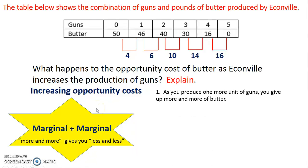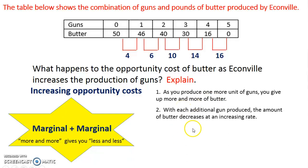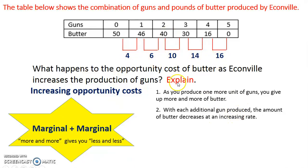Another way to explain it is that as you produce one more unit of guns, you give up more and more butter. Another way you could say it is that with each additional gun produced, the amount of butter decreases at an increasing rate. It's decreasing the amount of butter, but at an increasing rate — and that increasing rate is what gives the marginal analysis.